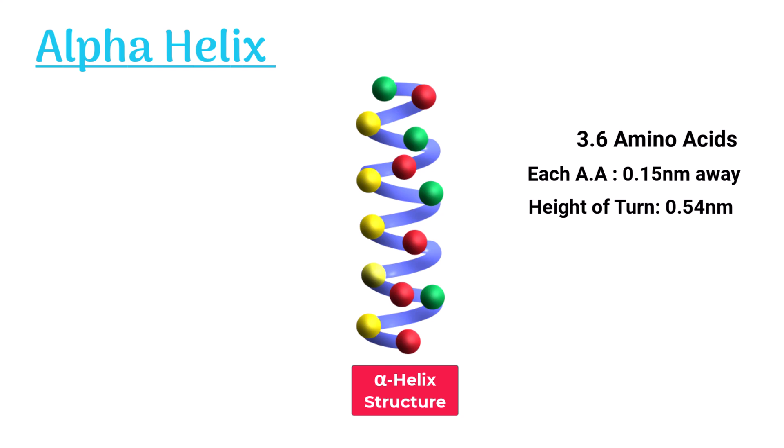Some amino acids like methionine and alanine are common in the helix. While few like proline can disrupt the helix because of their distinct shape.